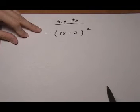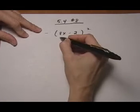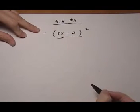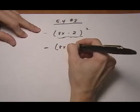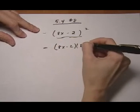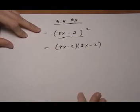First we're going to square out our binomial. So the minus sign just carries down, and then we have 8x take away 2 times itself. So that's squaring out the binomial.